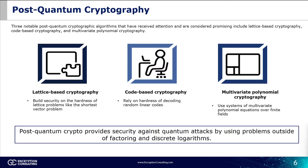The third algorithm is multivariate polynomial cryptography — a cryptographic framework that utilizes systems of multivariate polynomial equations over finite fields. Cryptographic algorithms represent mathematical equations involving multiple variables and coefficients, typically over finite fields. The security relies on the computational complexity of solving systems of polynomial equations, believed to be difficult for classical and quantum computers alike. By leveraging the algebraic properties of multivariate polynomials, this scheme offers resilience against various cryptographic attacks, making it a potential candidate for post-quantum cryptographic solutions.